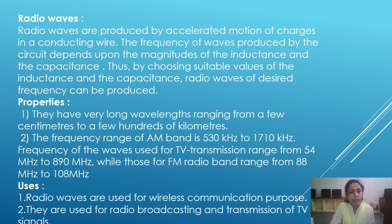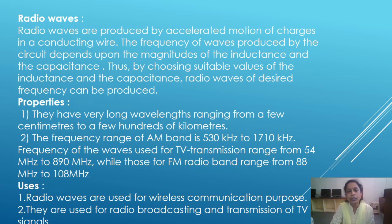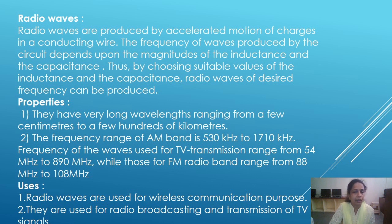Properties of radio waves: First, they have very long wavelengths ranging from a few centimeters to a few hundred kilometers. Second, the frequency range of the AM band is 530 kHz to 1710 kHz. The frequency of waves used for TV transmission ranges from 54 MHz to 890 MHz, while those for the FM radio band range from 88 MHz to 108 MHz. Therefore, radio waves have very long wavelengths.